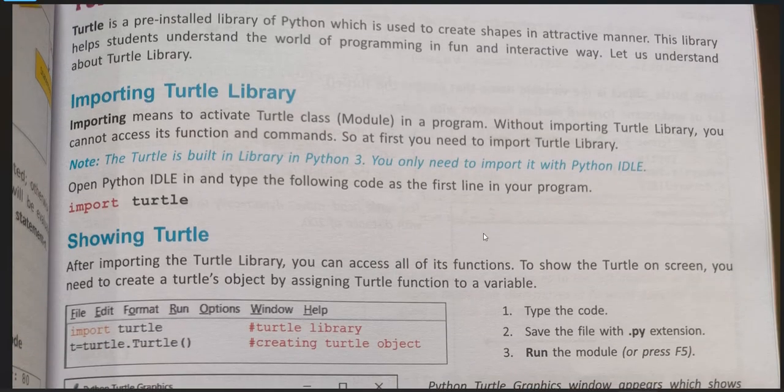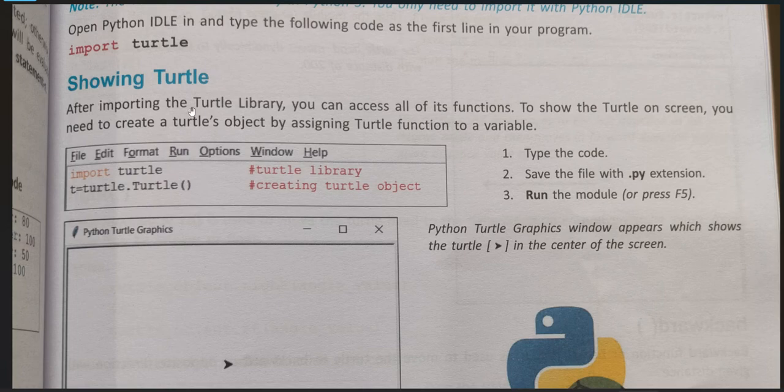Showing turtle - after importing the turtle library, you can access all of its functions. To show the turtle on screen, you need to create a turtle's object by assigning a turtle function to a variable. First line is import turtle. This will import the library. Then this is a variable name t equal to turtle dot turtle function, opening closing brace. This is the function. This creates a turtle object. We need to save this file with a dot py extension and run the module. This arrow you can see here, this is the turtle.